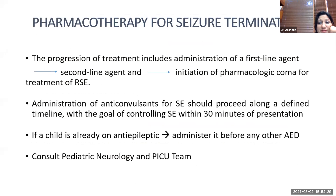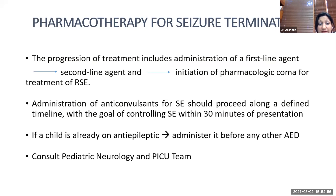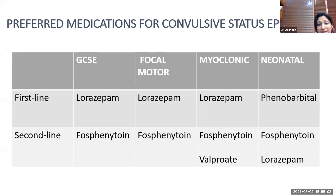Treatment progression includes administration of first-line agents, then second-line agents if seizures are not controlled, then pharmacologic coma for refractory status epilepticus. Anticonvulsant administration should proceed along a defined timeline with the goal of controlling status within 30 minutes. If the child is already on antiepileptic drugs, administer that drug first. Involve pediatric neurology and PICU teams. First-line medications include lorazepam or benzodiazepines for generalized convulsive status, focal motor, and myoclonic status. For neonatal status, phenobarbital is first-line; second-line agents include fosphenytoin, valproate, or lorazepam.